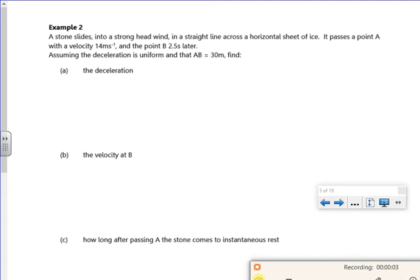Hi, this is the third video for the first lesson, so quite short videos hopefully. It says a stone slides into a strong headwind in a straight line across a horizontal sheet of ice. It passes point A with a velocity of 14 meters per second and point B at 2.5 seconds later.